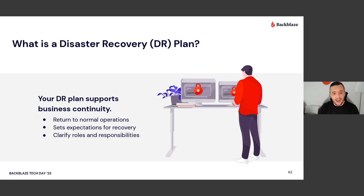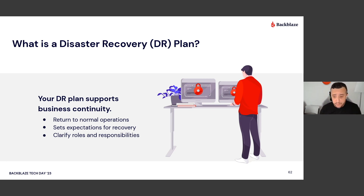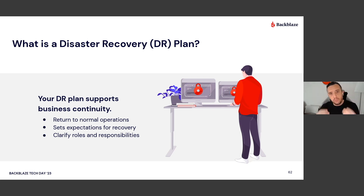So what is a disaster recovery plan? A DR plan is a plan for you to return to normal operations — the resources and processes that are going to get your business back up to speed. It sets the expectations for recovery. There are terms you may have heard of like RTO, which is your recovery time objective, and RPO, your recovery point objective. These are things you'll work with your teams to understand: how fast you need to get back up and how far back you need to recover from. A DR plan also clarifies roles and responsibilities — who's responsible for recovering infrastructure, who's responsible for moving data back on-prem — all clearly outlined so that when disaster strikes, you're ready to go.